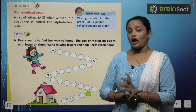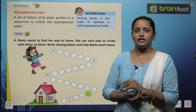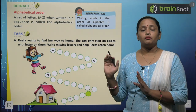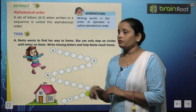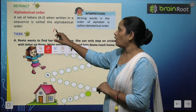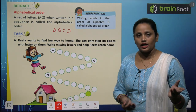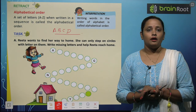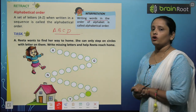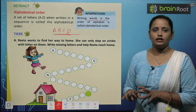So when A, B, C, D are written in sequence, that is the order. A ke baad B ka aana, B ke baad C ka aana, C ke baad D ka aana — is sequence ko hi hum alphabetical order kehte hain. Writing words in the order of the alphabet is called alphabetical order. Kisi bhi word ko is sequence mein likhne ko hi hum alphabetical order kehte hain.